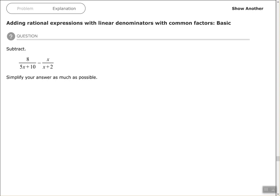The first thing I see is that 5x plus 10 in my first denominator can be factored. It has a greatest common factor of 5.